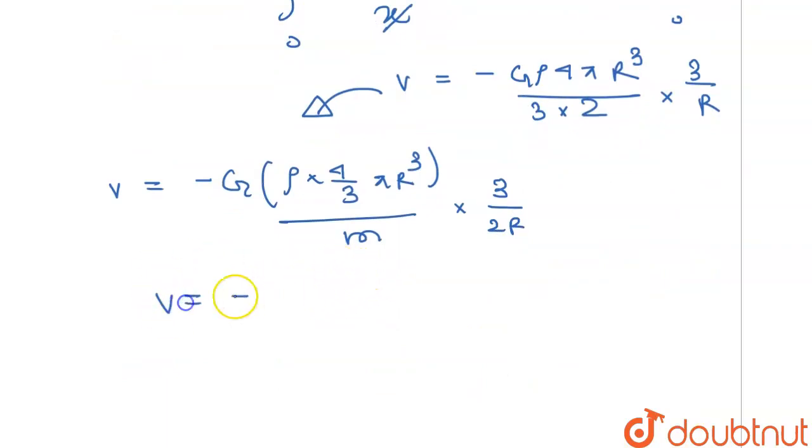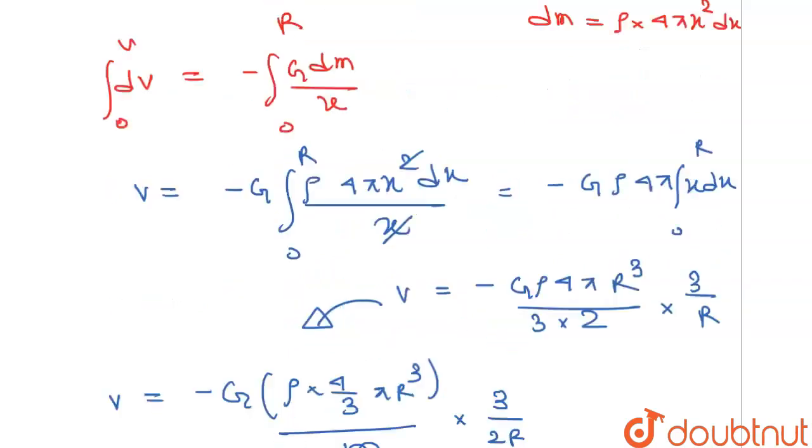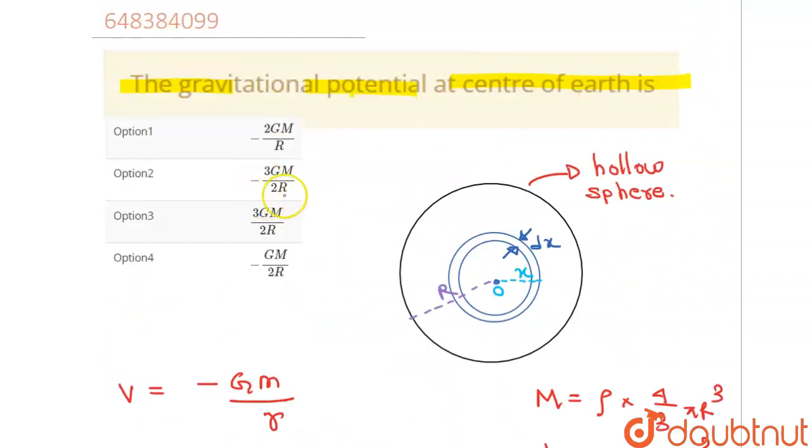So V is equal to negative of 3 by 2 r into m. So yes, this will be our answer. Option 2 will be our final answer.